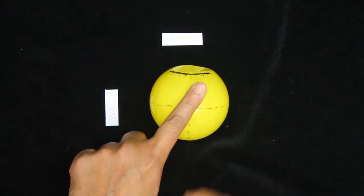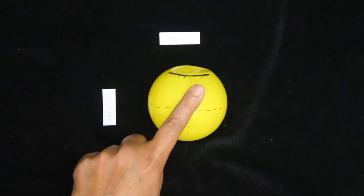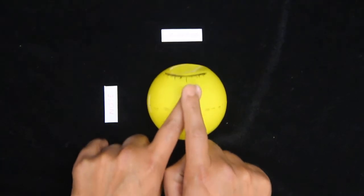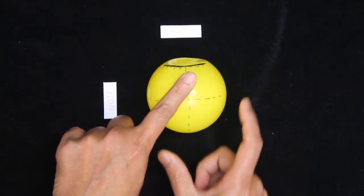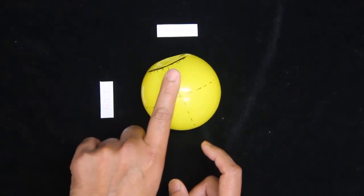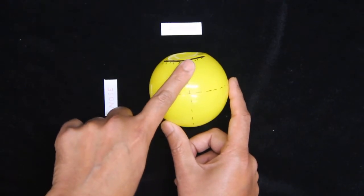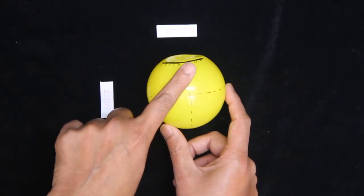So what happens when the superior rectus contracts? He's not really elevating the eyeball. Instead, in a normal position, the superior rectus can only adduct the eyeball. You can see this, he's just pulling the eyeball like this.